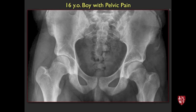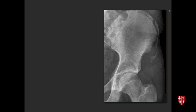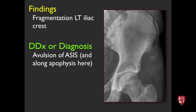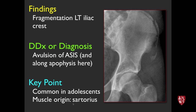Let's dig into the real cases. Here's the first case — the iconic image. What we're seeing is fragmentation along the iliac crest in a skeletally immature patient, with part of it avulsed off. This is avulsion of the anterior superior iliac spine with avulsion of a little bit of his apophysis. Key point: fairly common in adolescence, and the muscle origin there is the sartorius.